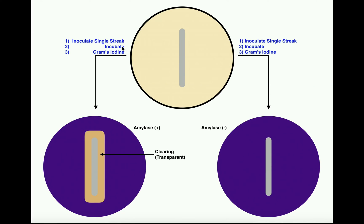We're going to inoculate by single streak, then incubate the organism, and when we take it out, we're going to pour Gram's iodine on it. If there's a zone of clearing, you have an amylase positive organism. For an amylase negative organism, where the gray line represents the smear, you'll be able to see the smear when you put iodine on it, but you'll see no clearing zone around that streak. However, if you have an amylase positive organism, once you pour the iodine on there, anywhere where there's no starch, you're going to see clearing. You'll see the streak where you put the bacteria, but around that you'll see a zone of clearing. If you hold this plate up to the light, you'll be able to see directly through this clearing zone.